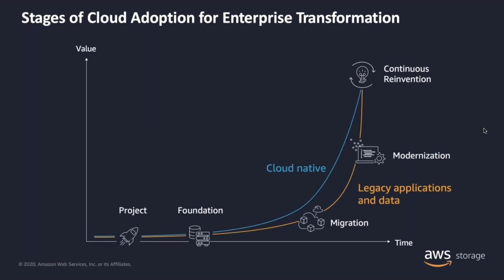I wanted to start by talking about the stages of cloud adoption — something we discuss quite a bit at AWS. For the typical enterprise, we identify various phases, starting with the project phase, where you're working on various projects moving to the cloud. The foundation phase takes it from project level to more of an enterprise-wide drive. And then, at some point — which varies for customers — you get to the migration phase, where all the work happens. That depends on your application environment, amount of data, location, global reach, and many organizations will need to tailor and customize the migration.